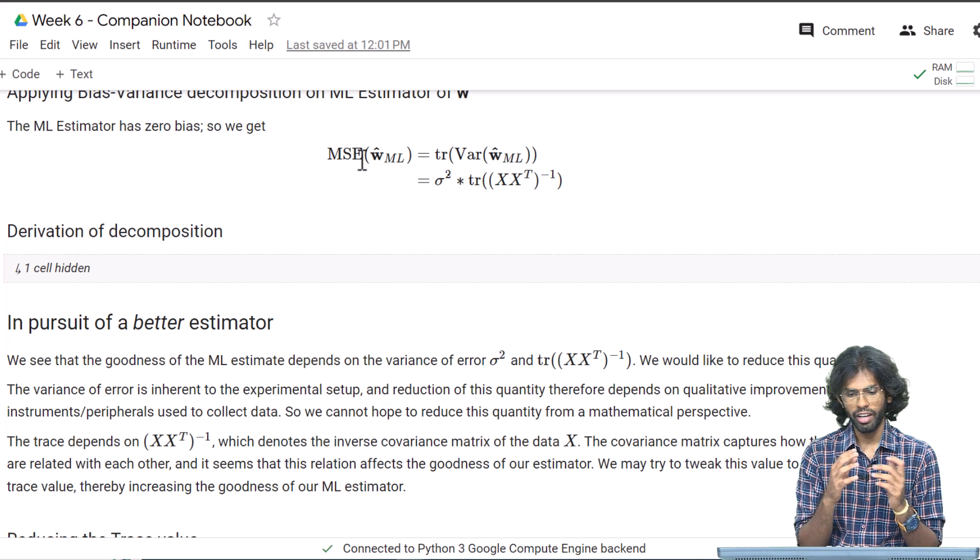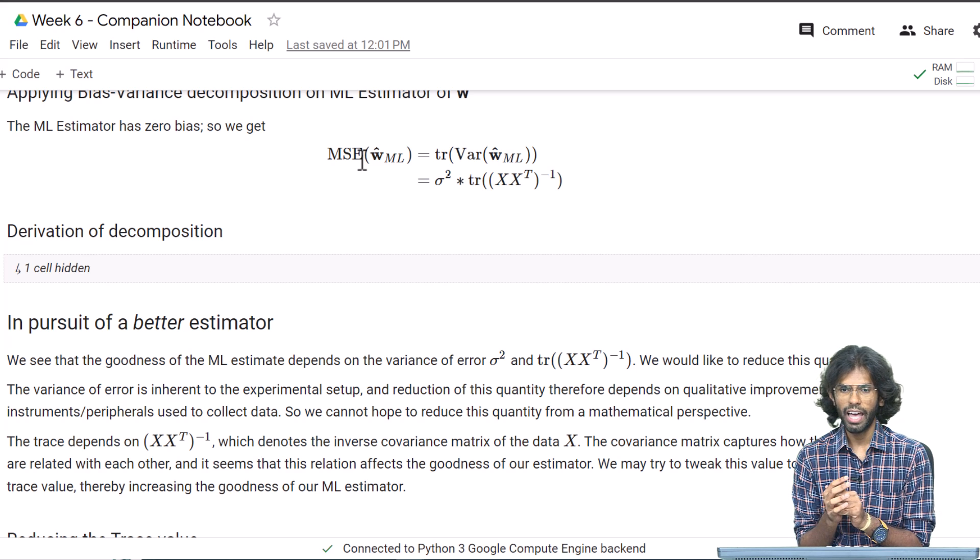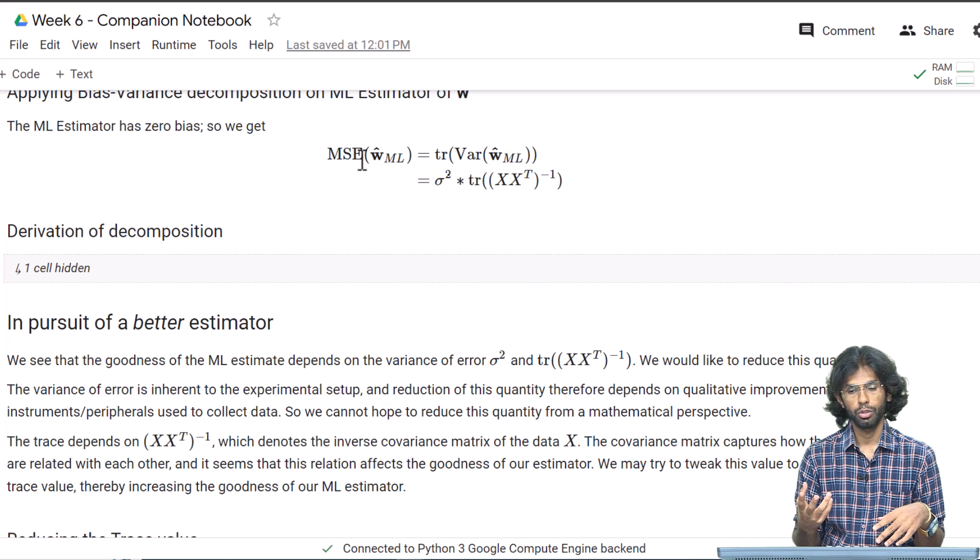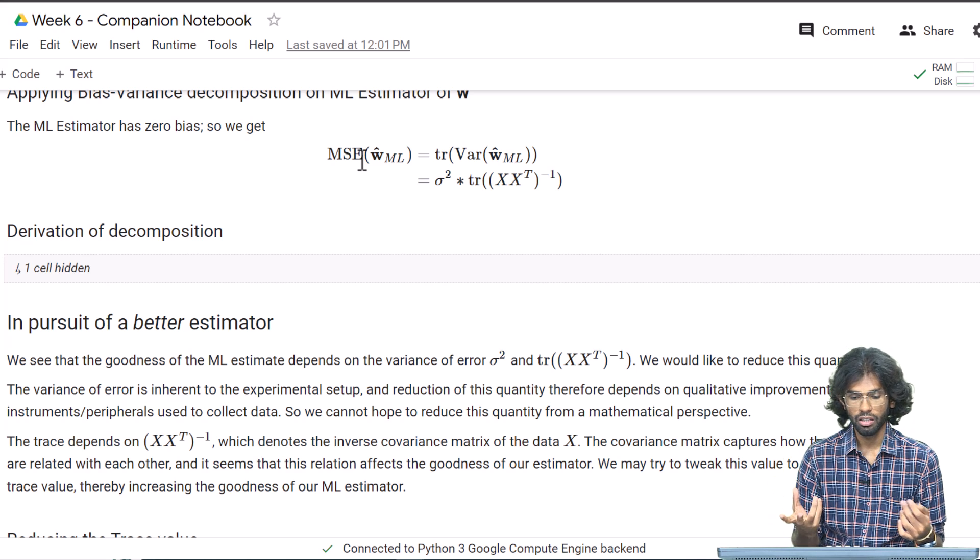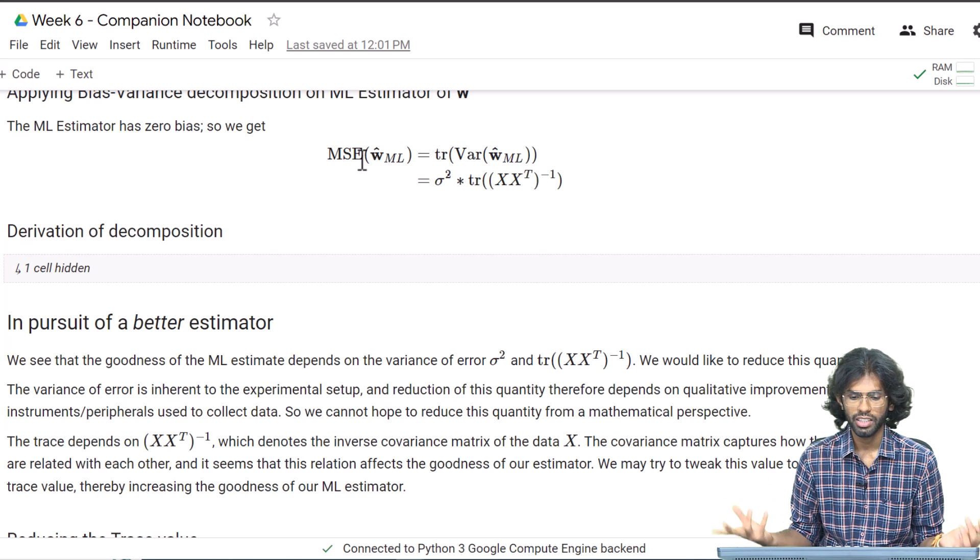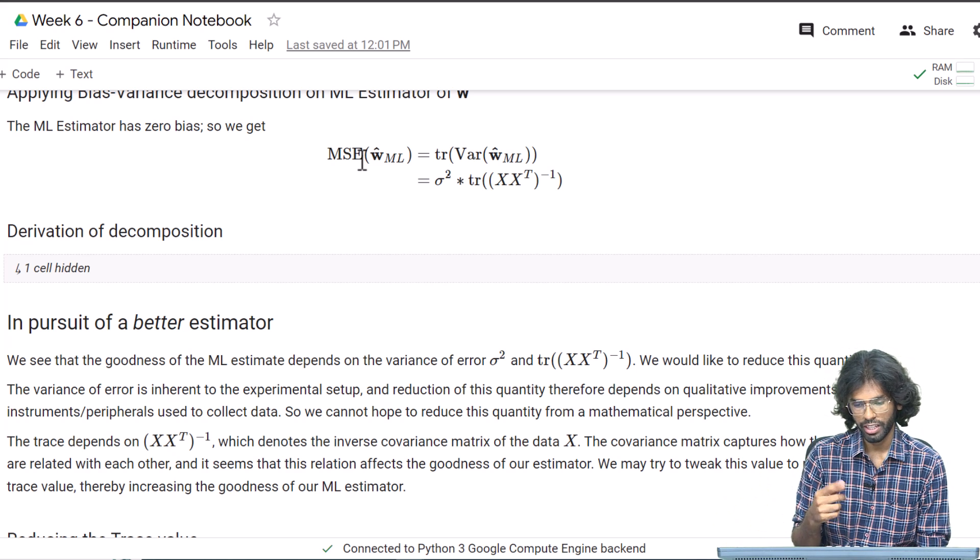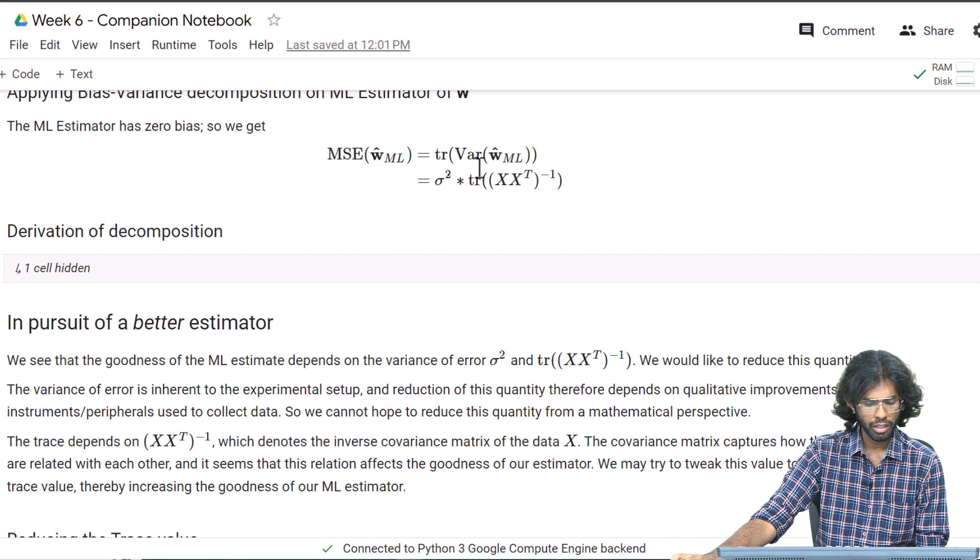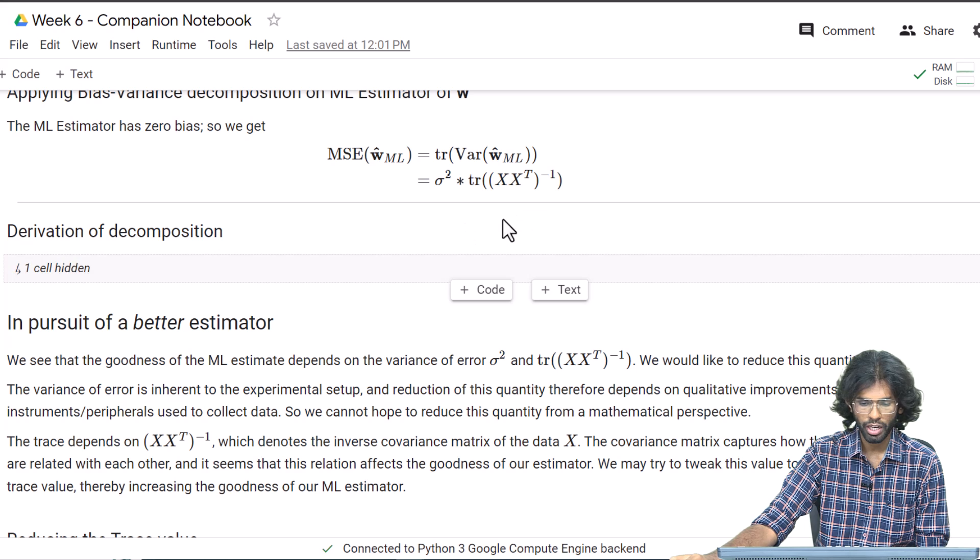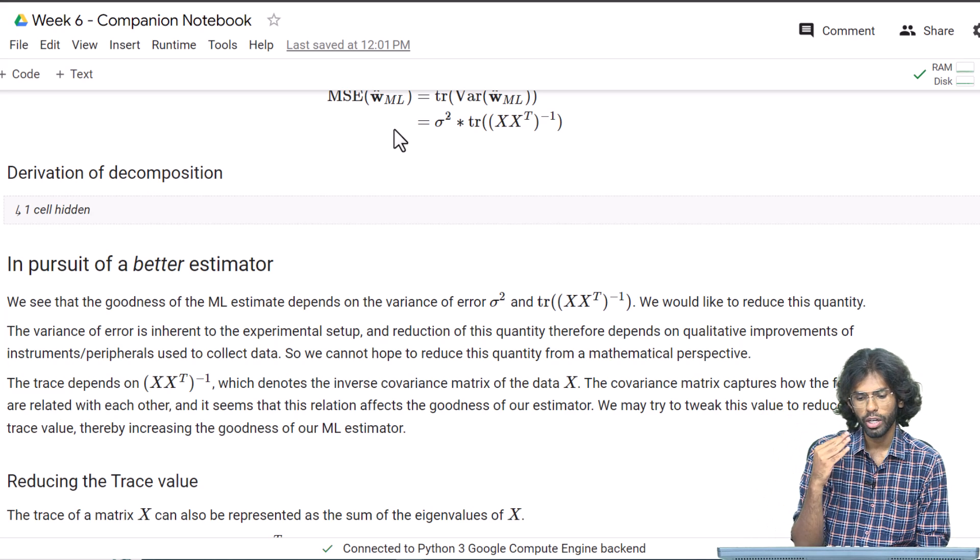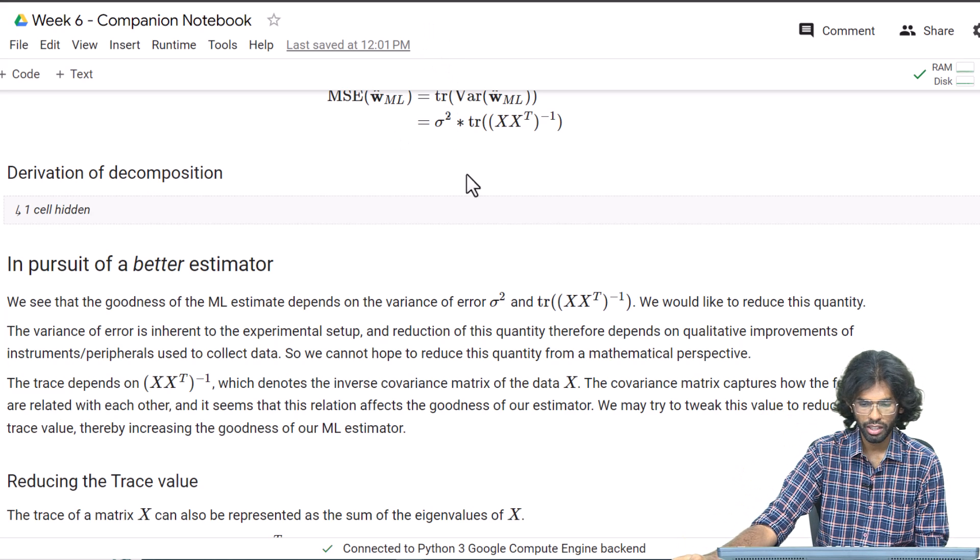If you want to reduce this MSE value, what options do you have? σ² is the variance of the error, which is inherent to the experimental setup—the apparatus you use to measure the variables. It is not really under the purview of a data scientist per se. But the trace of (XX^T)^-1 is more data-oriented, and perhaps this requires more analysis. To make MSE lower, you would want to reduce this trace.